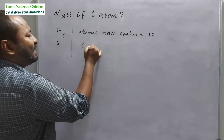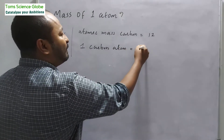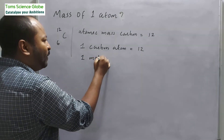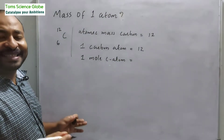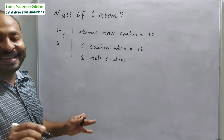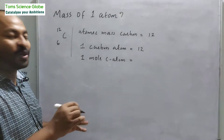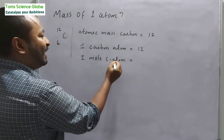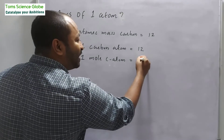Let's look at this. For a single carbon atom, we say its atomic mass is 12. For one mole of carbon atoms, what is the mass? One mole of carbon atoms has a mass of 12 grams.